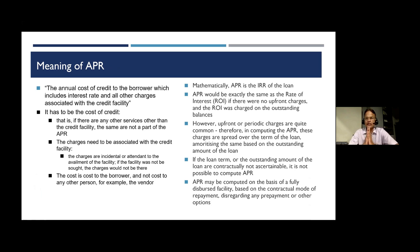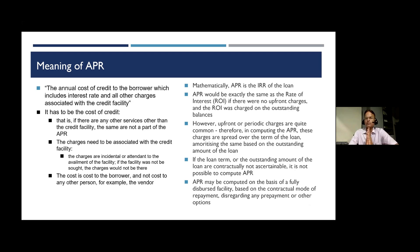The RBI defines APR as the annual cost of credit to the borrower, which includes the interest rate and all other charges associated with the credit facility. The most important point to understand is it's the annualized cost of credit. The biggest component is the rate of interest, but if there are other charges associated with the credit facility — whether charged on a regular basis, periodic basis, or one-time — irrespective of their nature, all charges associated with the credit facility form part of the APR.